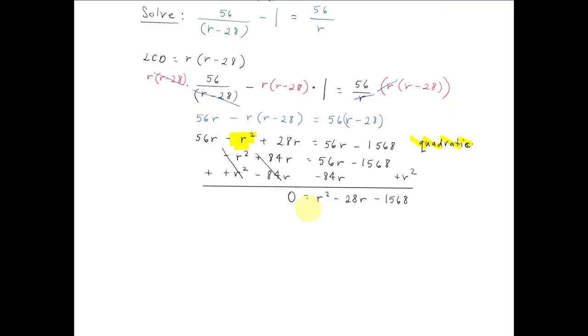Great. Now we can go ahead. We got 0 on one side. All we have to do is factor, and then use the 0 product rule, and set each factor equal to 0, and then solve. All right, so let's go ahead and factor this.